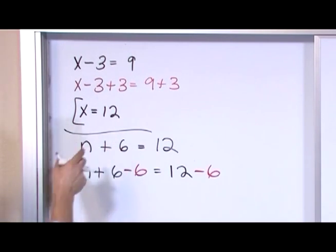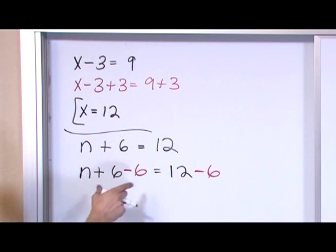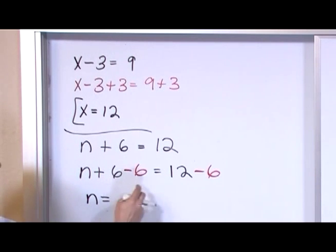So this equation is the same as this one. The only reason I'm subtracting it like this is because this is going to make 0. So on the left hand side I'm going to have n is equal to 12 minus 6 is 6, and that is the answer.